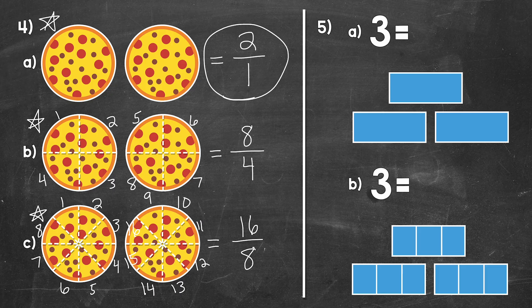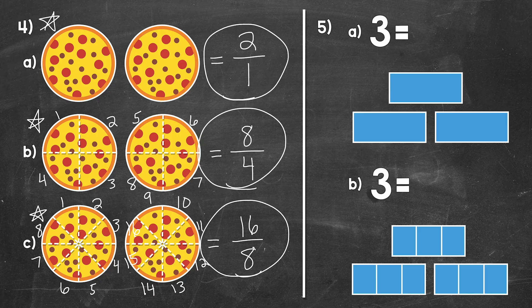Now all three of these fractions are equivalent — they all equal two. So really the most simple way to write a whole number as a fraction is just put the whole number over one. But we need to be familiar with equivalent fractions as well, because when working with fractions and whole numbers, we will sometimes need these equivalent fractions or be able to recognize them.